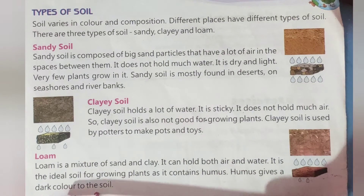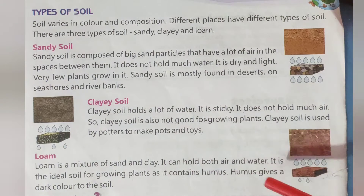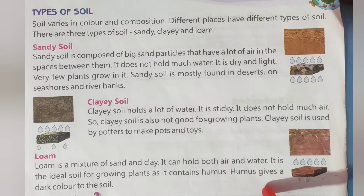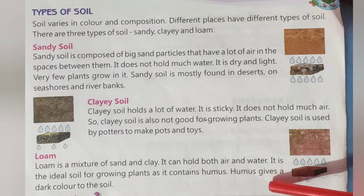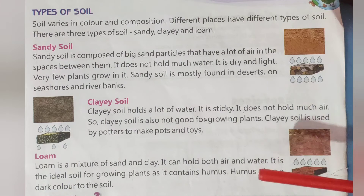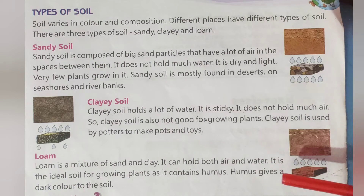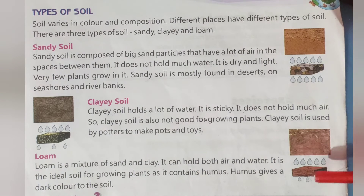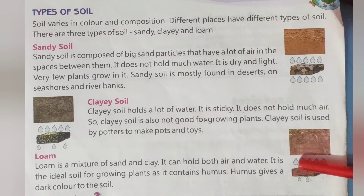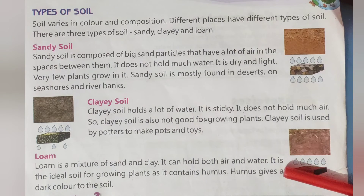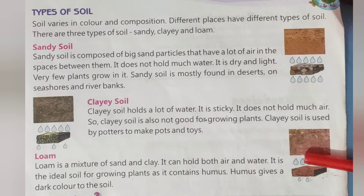Loam is the ideal soil for growing plants as it contains humus, which gives a dark color to the soil. I think you enjoyed this video. Please like and share. Thank you.